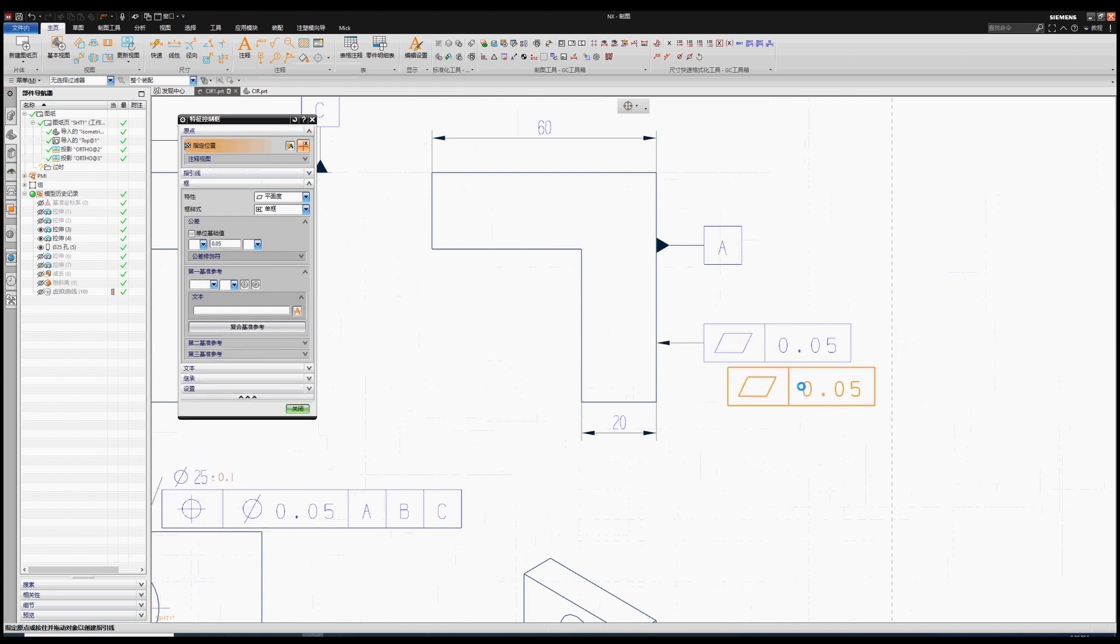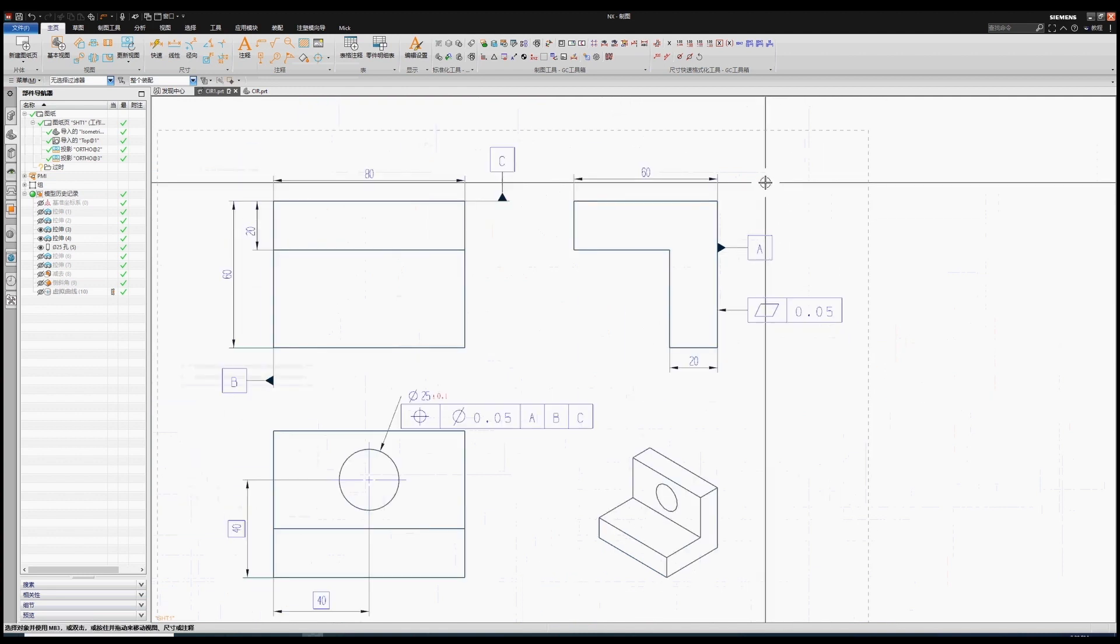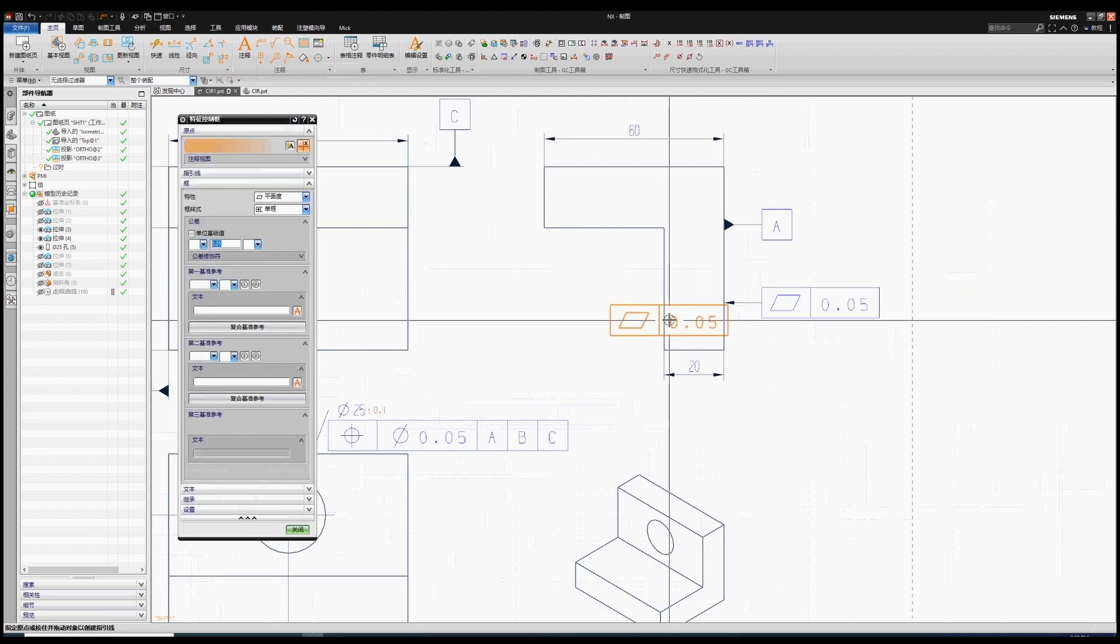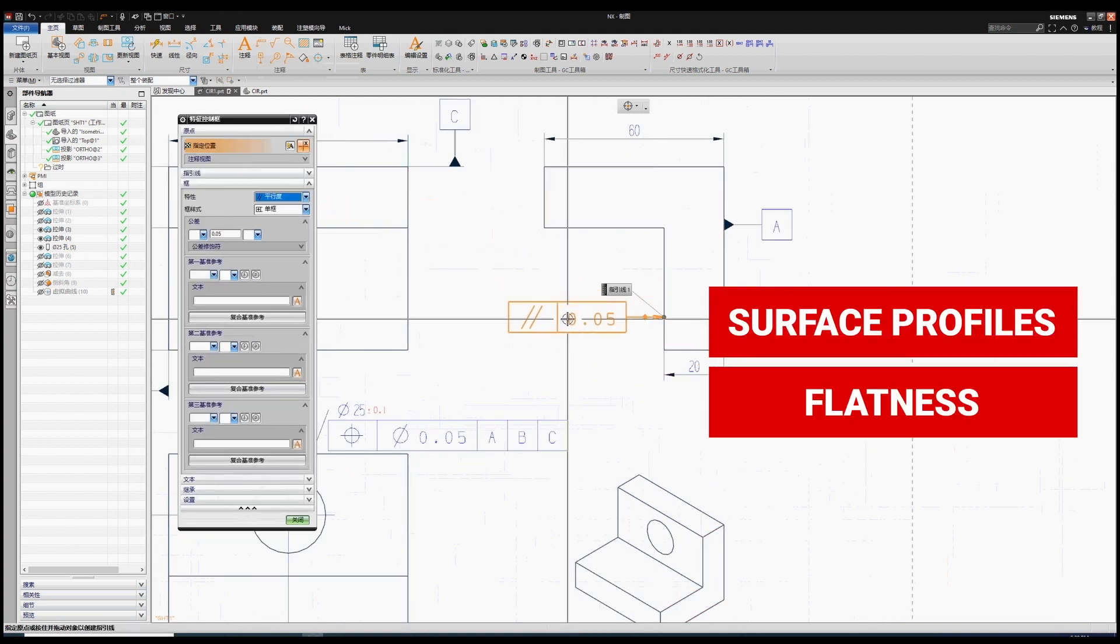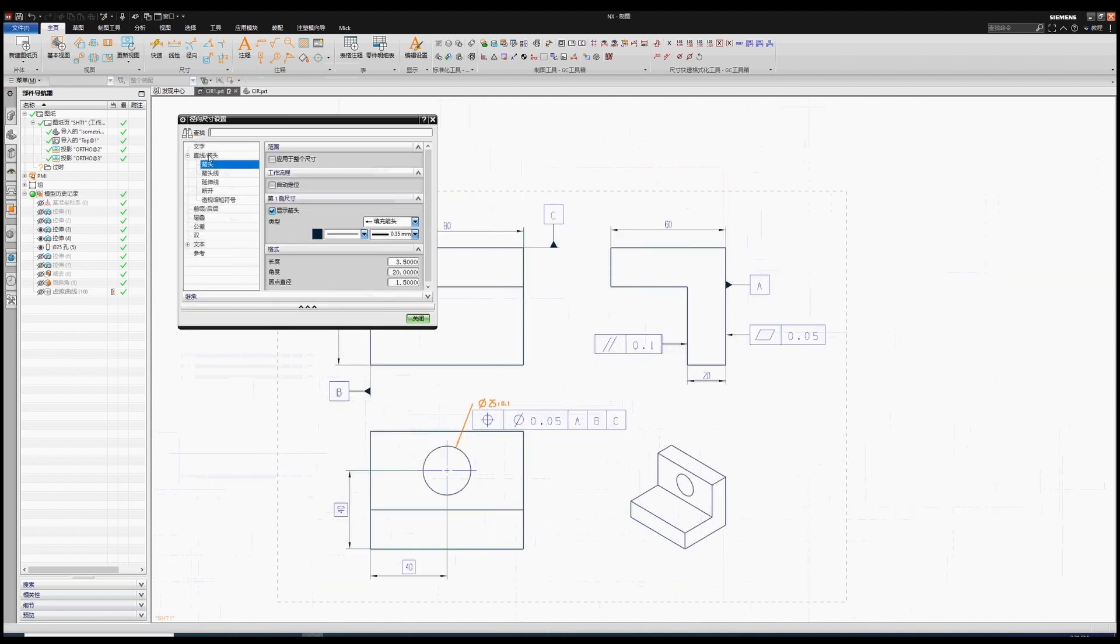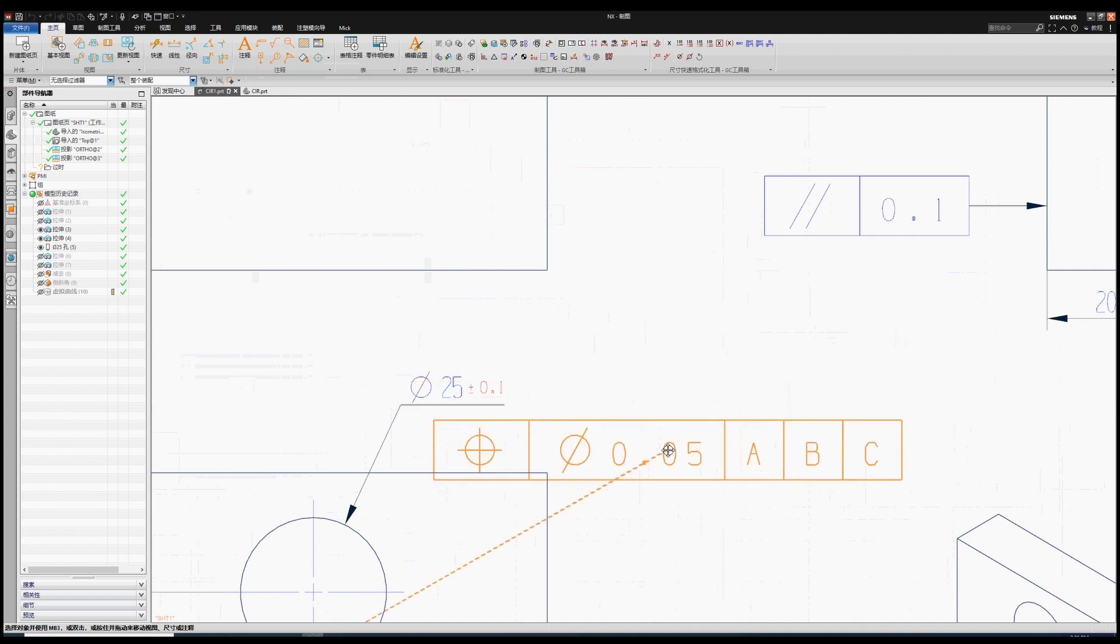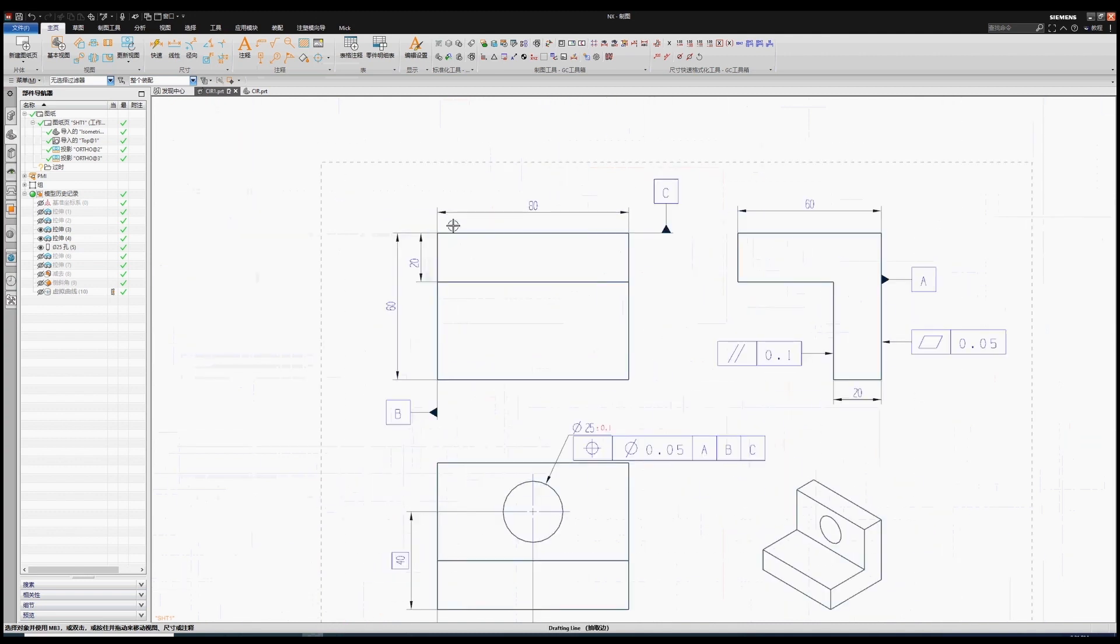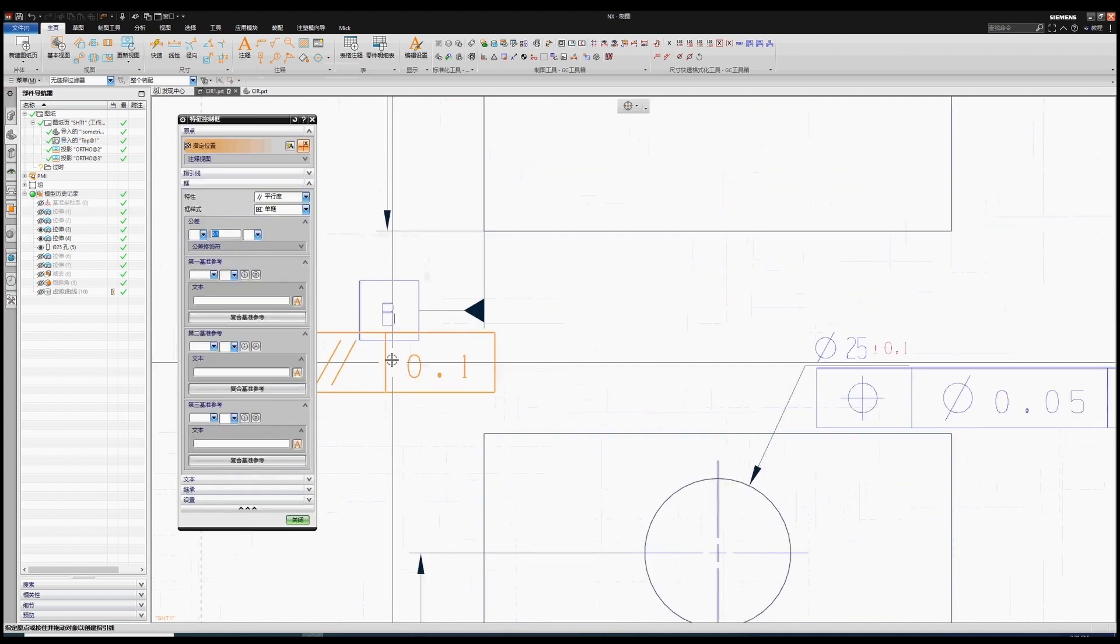Second, not every geometric symbol on the drawing needs to be in relation to a datum. Some examples of these that don't need it would be surface profiles, flatness, straightness and circularity. Third, three data are usually enough for any drawing. If you have the right three, then this is a good sign that you're using GD&T correctly.